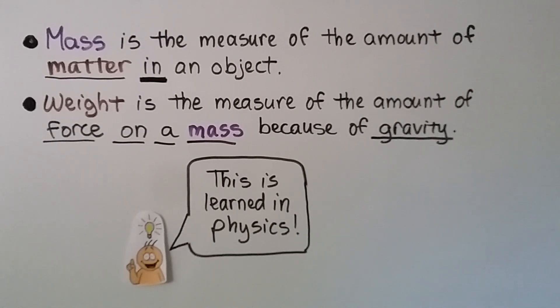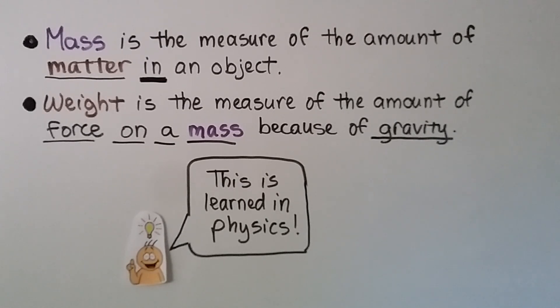Mass is the measure of the amount of matter in an object. Weight is the measure of the amount of force on a mass because of gravity. This is learned in physics.